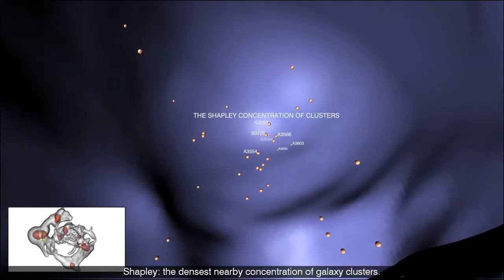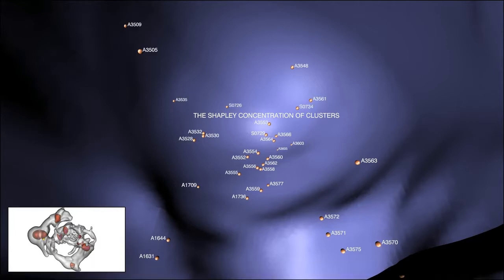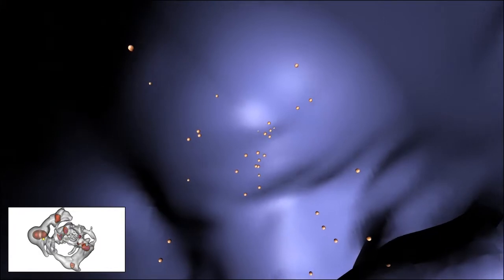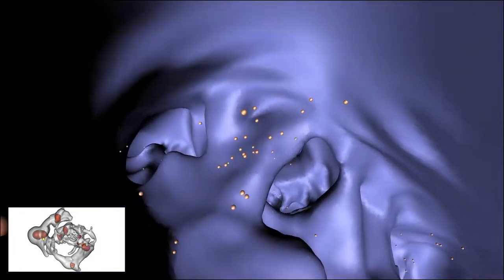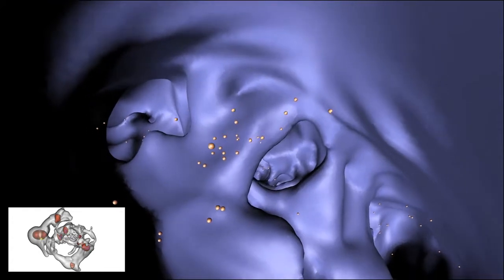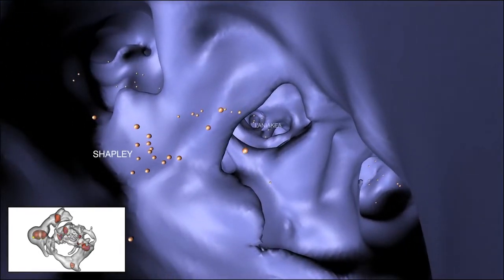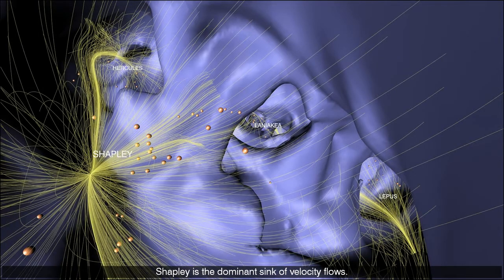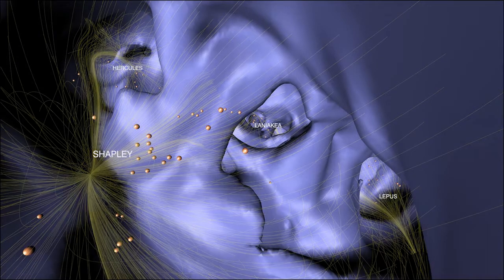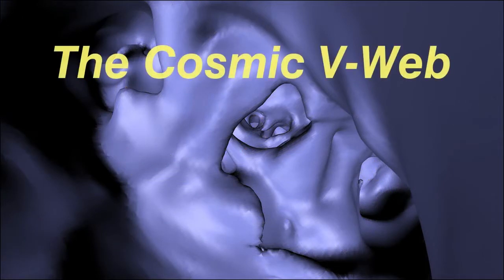Shapley, the densest nearby concentration of galaxy clusters. Shapley is the dominant sink of velocity flows.